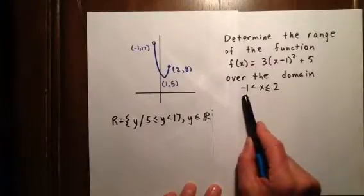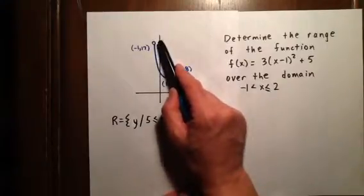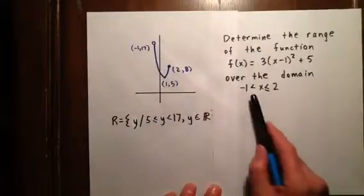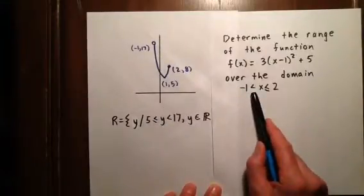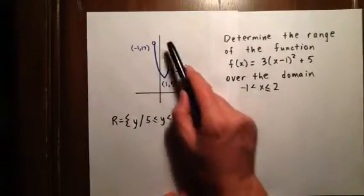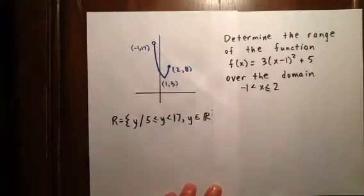Whatever the y value is associated with -1 isn't actually part of what we're trying to determine at that point right there. So because there's no equal to sign under that less than, we put an open circle right there.